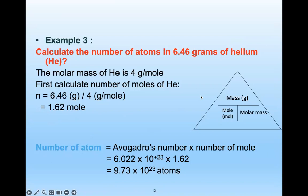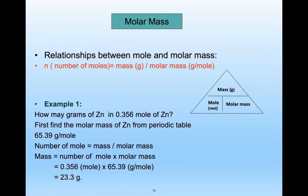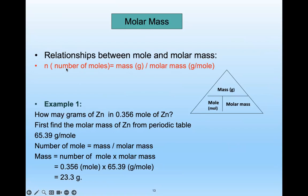Molar mass relates moles to mass: number of moles equals mass divided by molar mass. Example: how many grams of zinc in 0.356 moles of zinc? First get the molar mass of zinc from the periodic table — you don't memorize it, you get it in the exam. Then use: mass equals number of moles multiplied by molar mass.